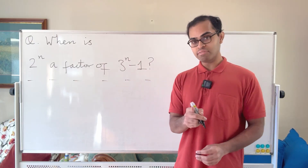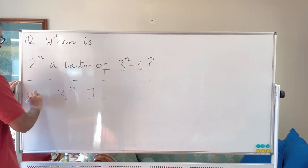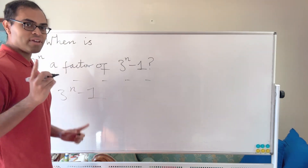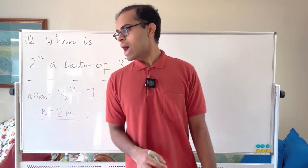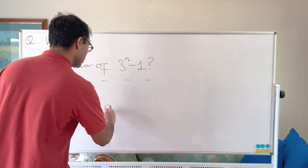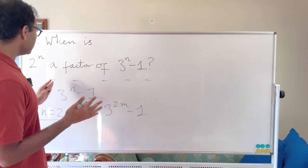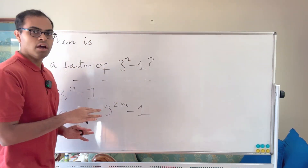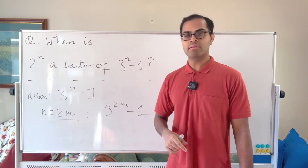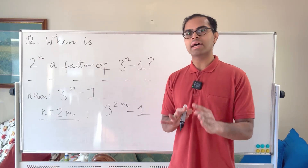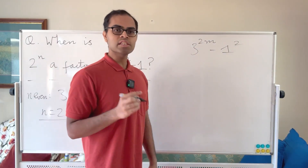Now let's look at n being even. With 3^n − 1 and n even, write n = 2m for some positive integer m. Then 3^n − 1 becomes 3^(2m) − 1, and we want to find the highest power of 2 dividing that. Ideally it won't be too high, ruling out large n.